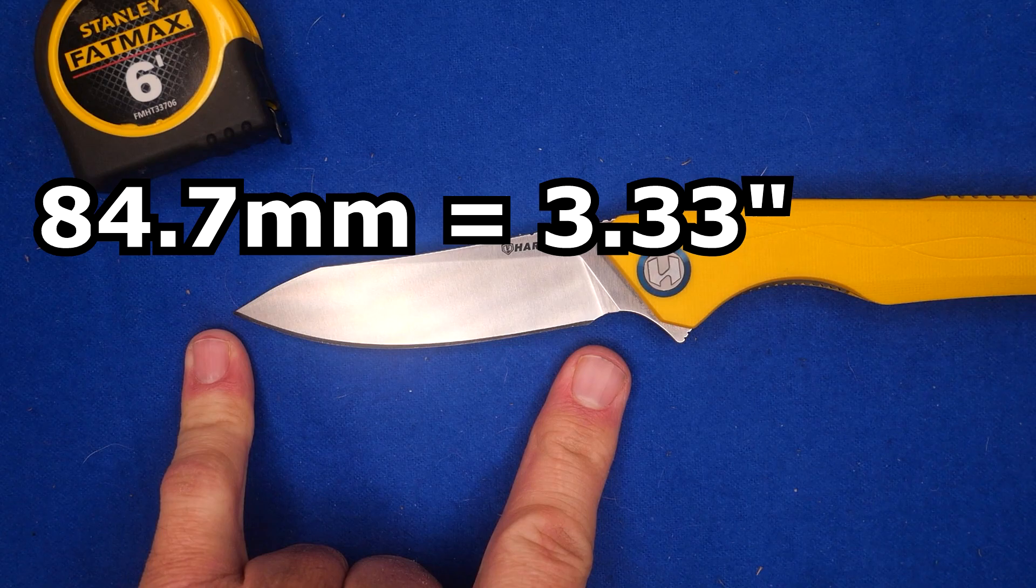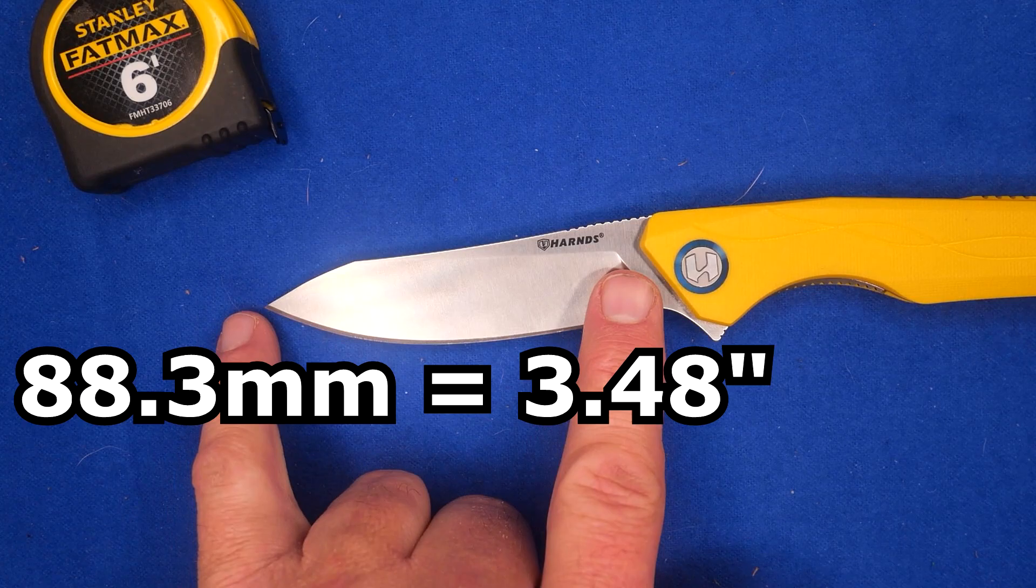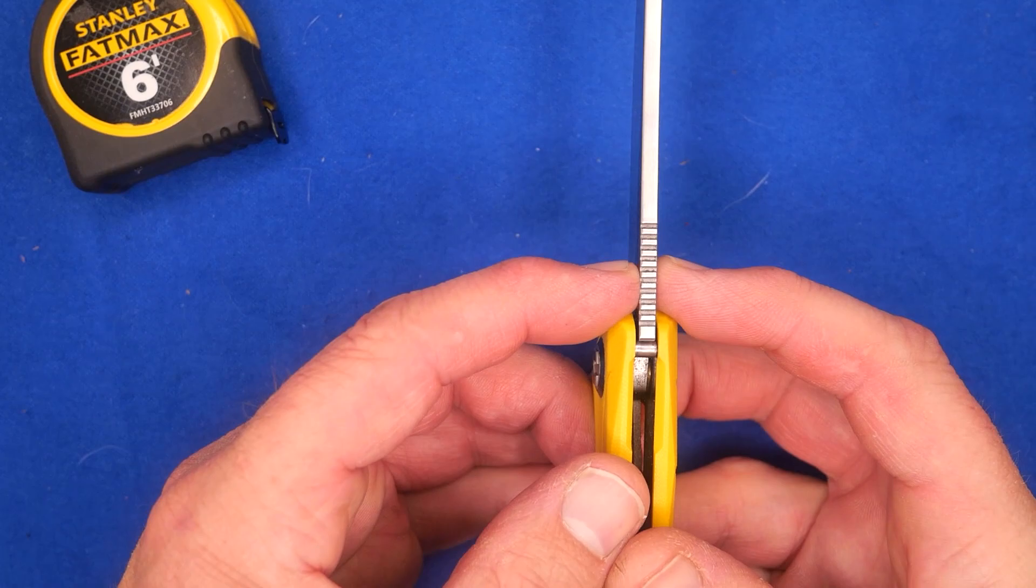The blade length, tip to the G10, 88.3 millimeters, 3.48 inches. So that's why they're calling it a three and a half inch knife. The thickness of the blade: 2.94 millimeters, 0.116 of an inch, so just a bit under an eighth.